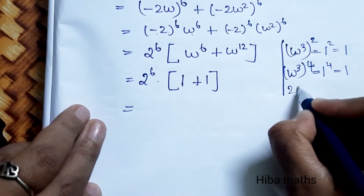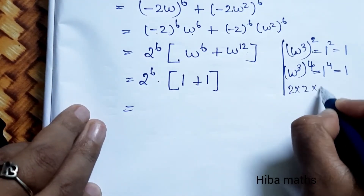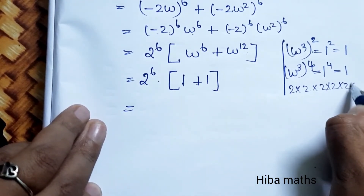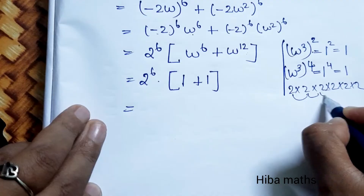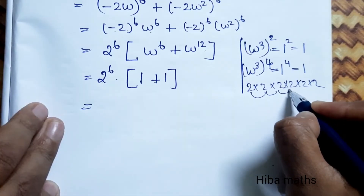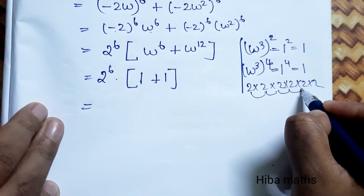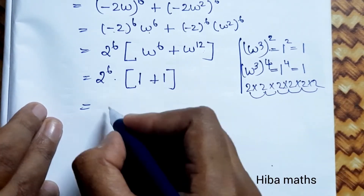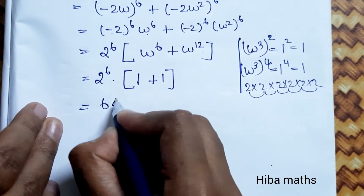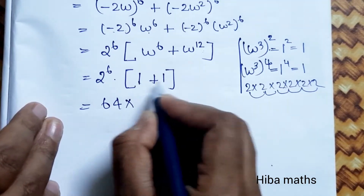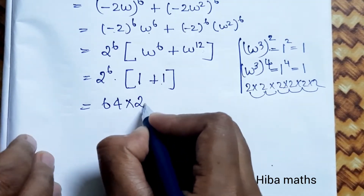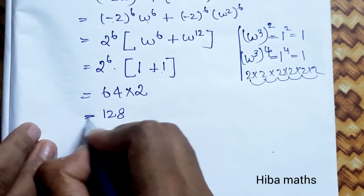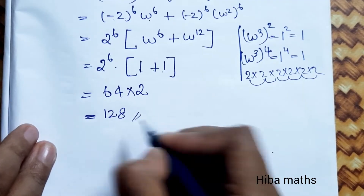Now, 2^6 = 2 × 2 × 2 × 2 × 2 × 2. So: 2×2=4, 4×2=8, 8×2=16, 16×2=32, 32×2=64. Then 64 × 2 = 128. This is our proof — the answer is 128.